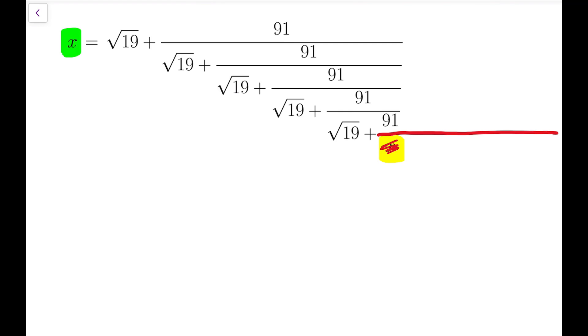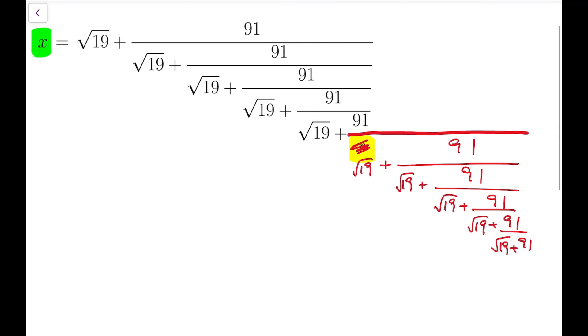At the yellow bit, I will write root 19 added by 91 divided by root 19 plus 91 divided by root 19 plus 91 divided by root 19 plus 91 divided by x.